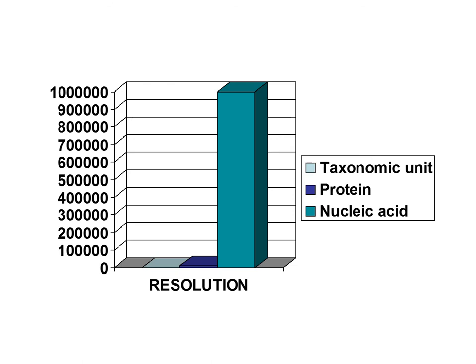In terms of resolution, if we classify using the taxonomic system, resolution is actually very low. Using allozymes and molecular markers for protein is also very low. However, when you have nucleic acids, you are only limited by the size of your database, which definitely leads to a higher degree of resolution.